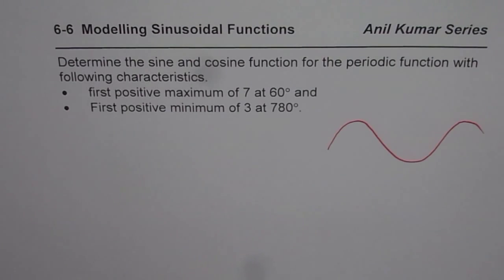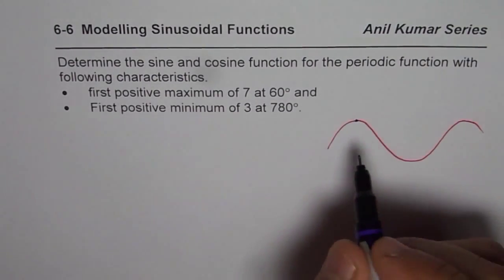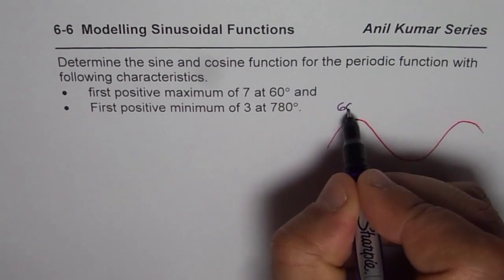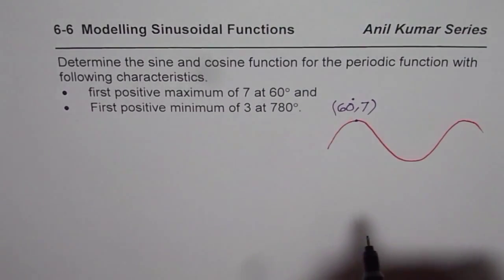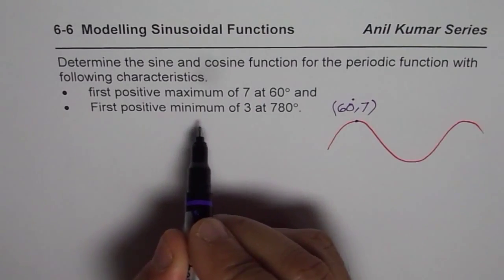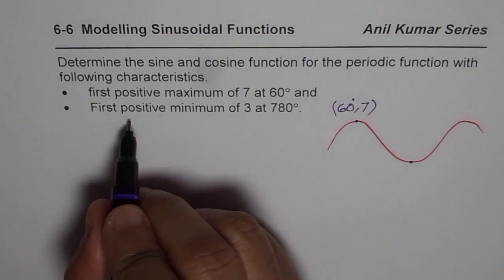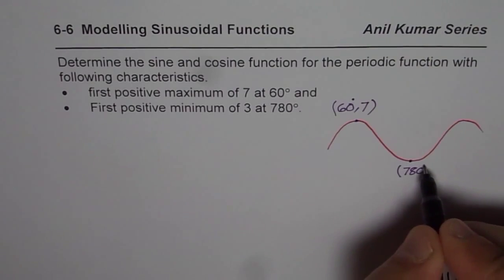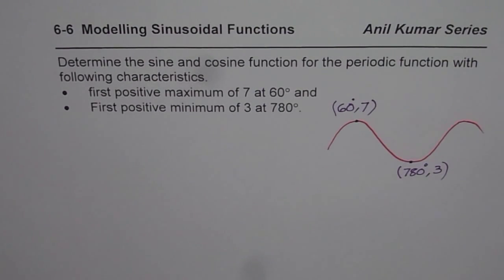Read the question and write down the things you learn from the given conditions. It says first positive maximum of 7 at 60 degrees. When drawing a sine wave, along the x-axis you have theta in degrees, so we write the coordinates as (60°, 7). The second condition says first positive minimum of 3 at 780 degrees — so the minimum value is also positive. At times students get confused with that. So 780 is the theta, the independent variable, and that gives you the sine wave.